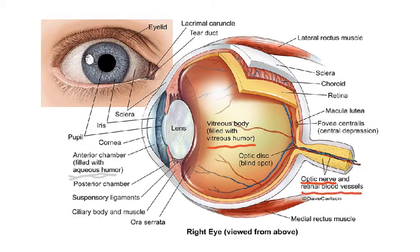Where this blood vessel comes out, that area is called the blind spot, which means that at this place there are no light-sensitive cells. The two types of light-sensitive cells are called rods and cones. So with no rods and cones, if an image forms on that area, that is the blind spot.